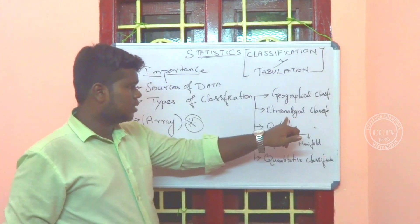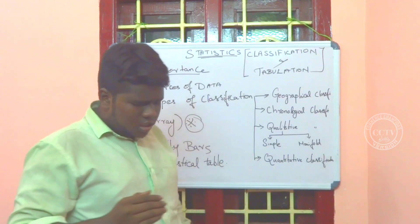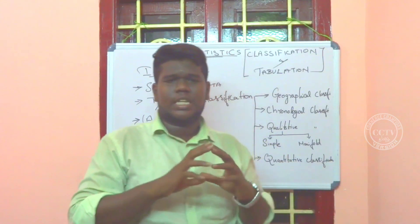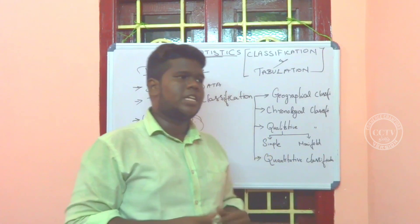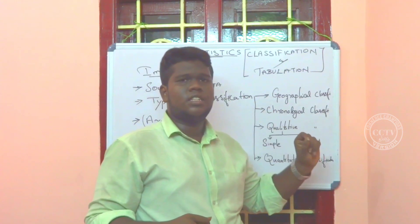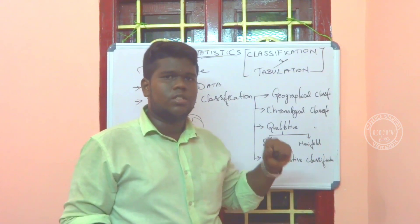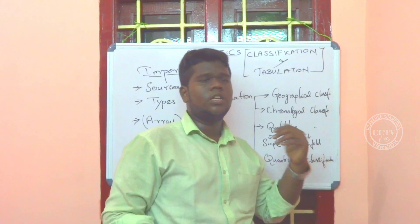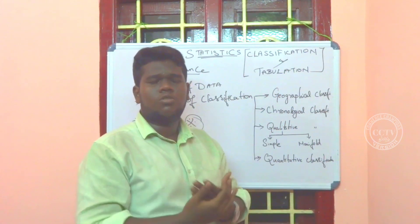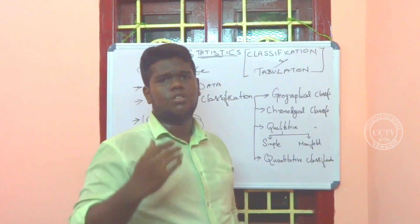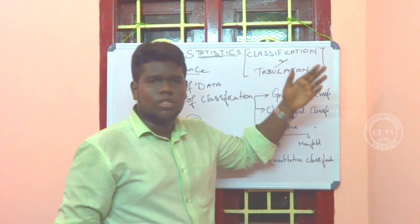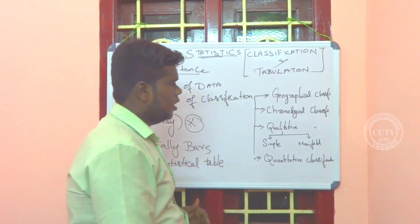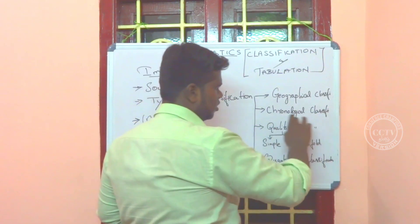When there is Chronological Classification, the denominator is Time. You have to compare across time periods — for example, in 2019, 2018, 2017. You compare 5 years of statistics. From 2017, 2018, 2019, 2020 — these are different years. Comparing data across years is known as Chronological Classification.